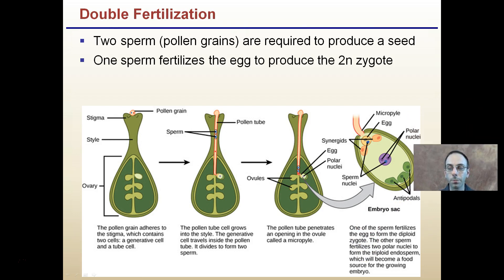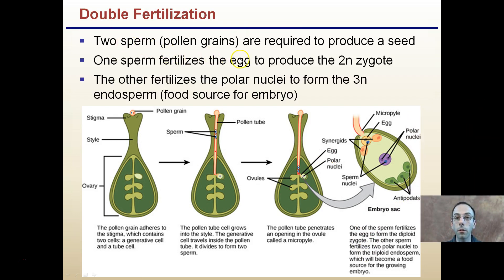We have something called double fertilization. Two sperm, or pollen grains, are required to produce a seed. One sperm fertilizes the egg to produce the zygote (2N). The other fertilizes the polar nuclei to form the 3N endosperm, which is the food source for the embryo. So one pollen grain fertilizes the egg to produce the zygote, and the other fertilizes this area to produce the food for that seed to initially feed on once germinated. Here's our pollen grain and pollen tube with two sperm cells coming down — one fertilizing the egg, the other making the endosperm.